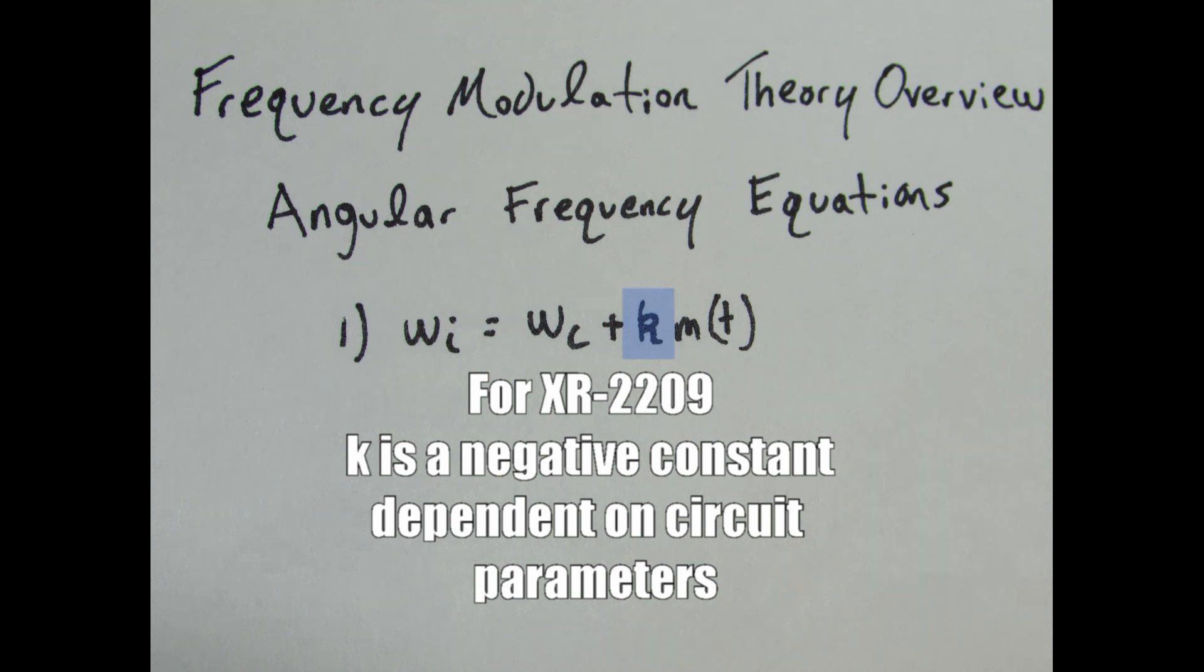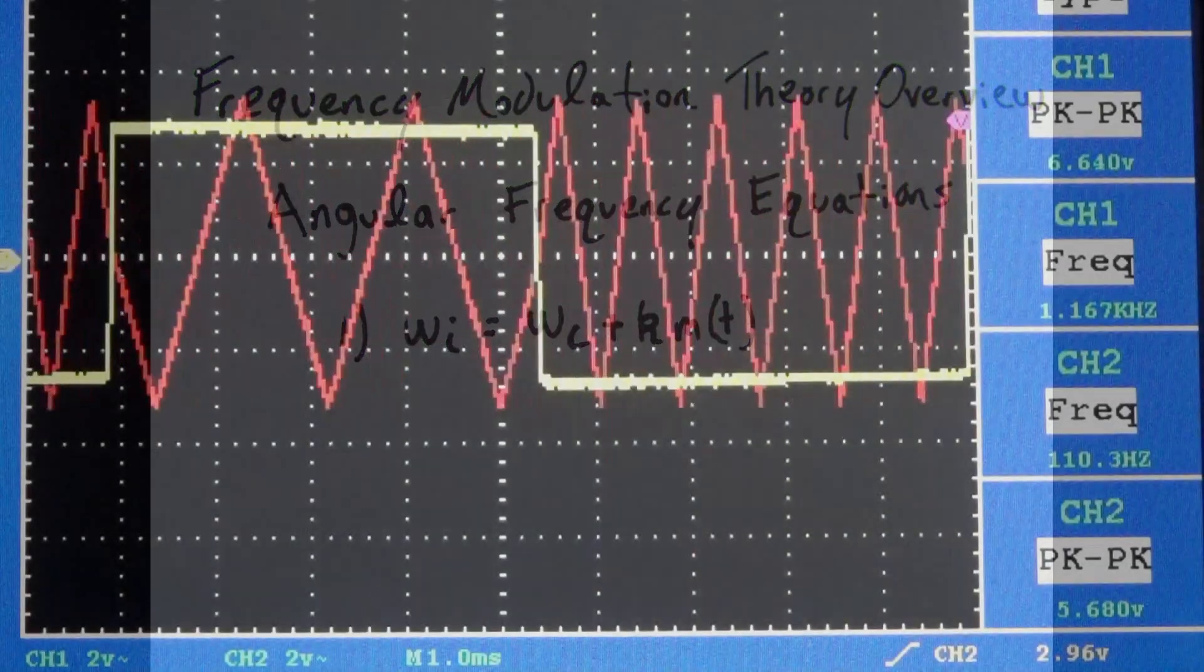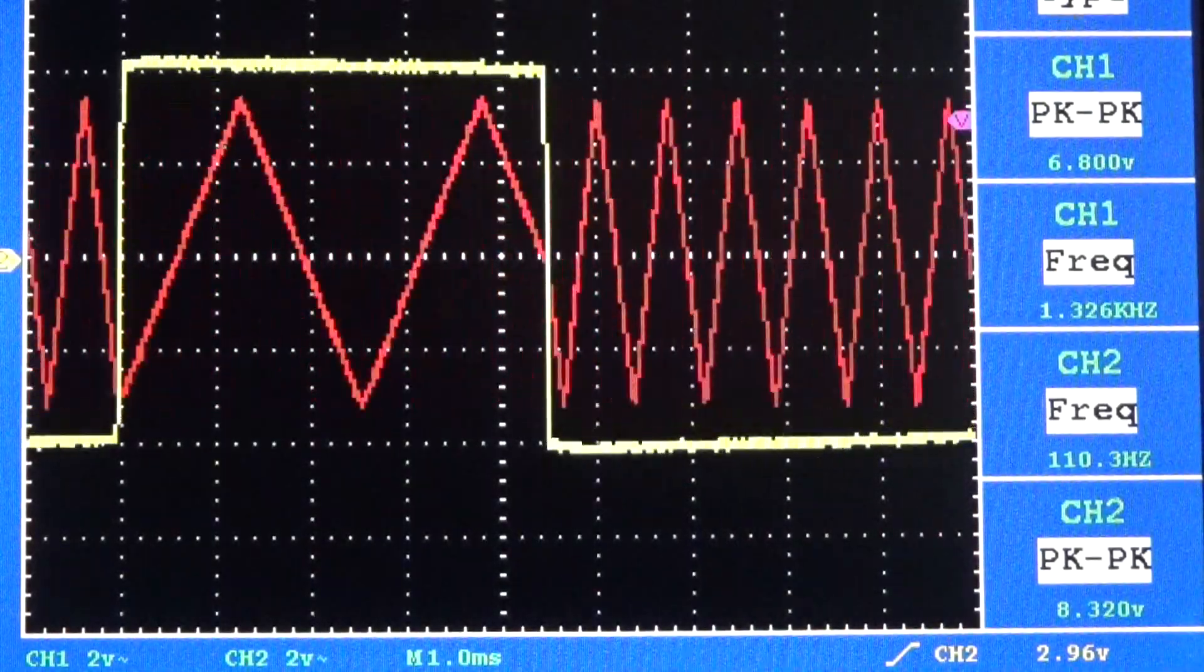For the VCO used in this video, k is negative. That's why, for an increasing voltage, you get a decreasing frequency.